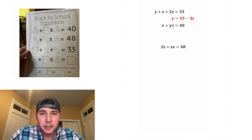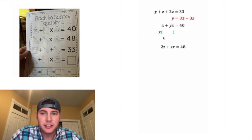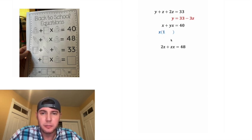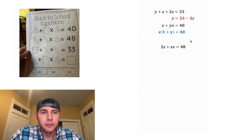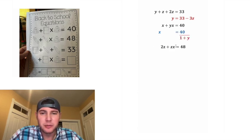Both terms in the second equation have an x, so let's factor out that common x. x times what gives us x? That's 1. And x times what gives us yx? That's plus y. So we have x times (1 + y) still equal to 40.